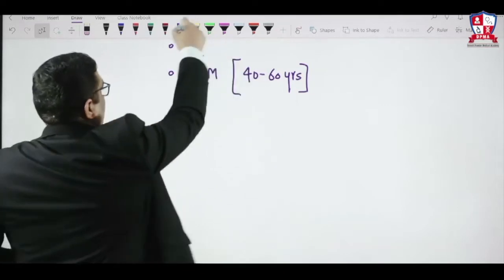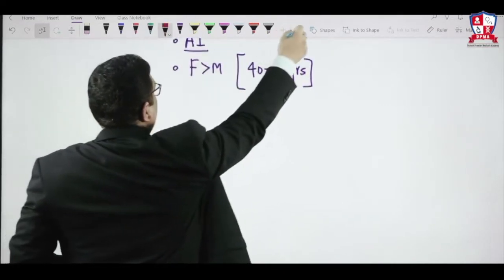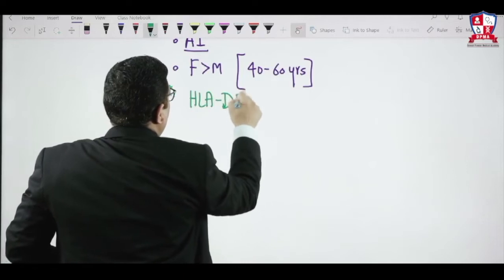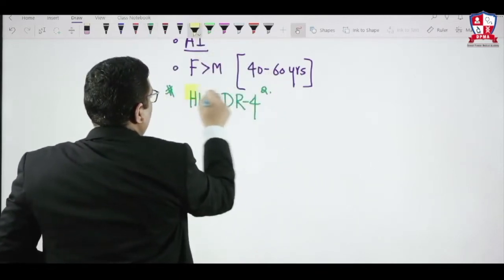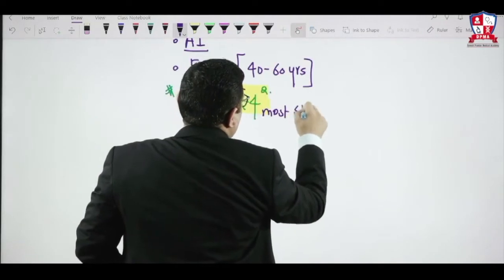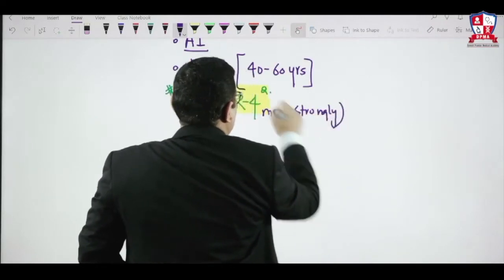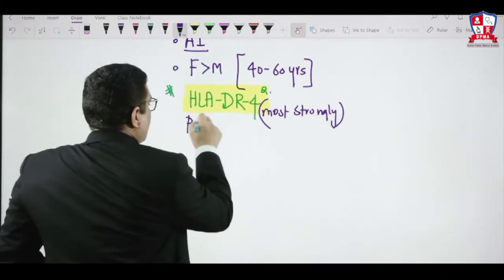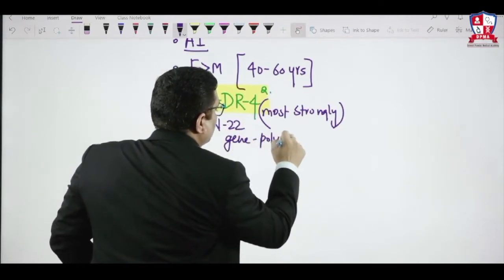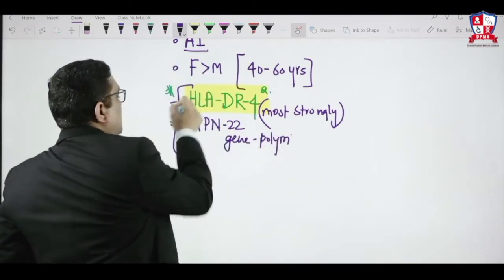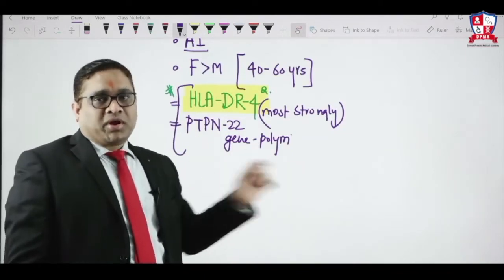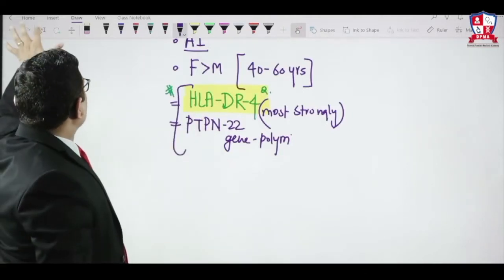Regarding etiology, genetic factors are associated with rheumatoid arthritis. It is strongly associated with HLA-DR4 — this is an important exam question. HLA-DR4 is the most strongly associated HLA molecule. Additionally, PTPN22 gene polymorphism is associated with this disorder and is the most common gene associated with autoimmunity.